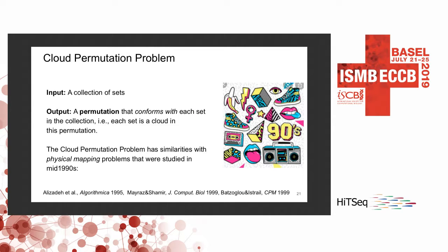We use a special case of the cloud superstring problem. We assume the cloud superstring does not contain repetitive characters, so the input is a collection of sets and the output is a permutation string that contains every set in the collection as a cloud. Actually, about 20 years ago various physical mapping studies analyzed a problem similar to the cloud permutation problem, but we are not aware of any software tool that resulted from those studies and could be applicable to SLRs.